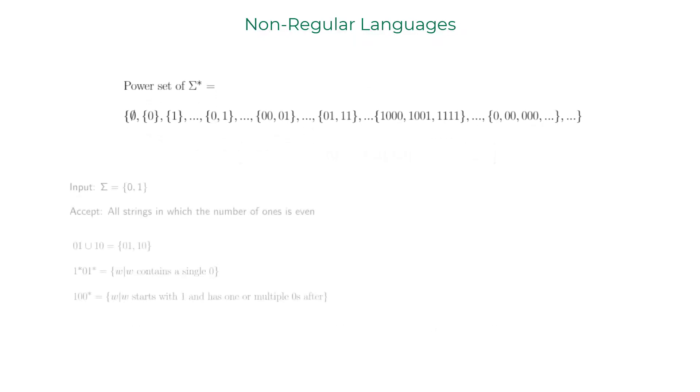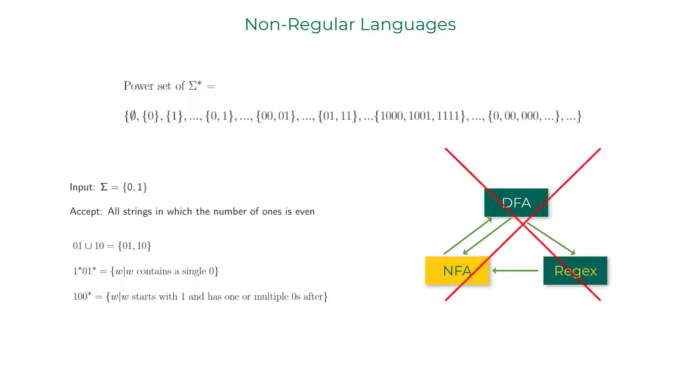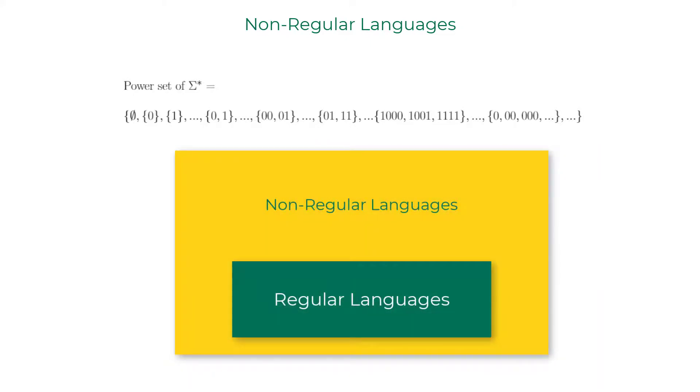We already know that few of the languages in this power set are regular languages. We demonstrated that they are regular by either coming up with a DFA or an NFA or a regular expression. But it turns out there are uncountably infinite languages that cannot be recognized by any finite automaton. Such languages are called non-regular languages.